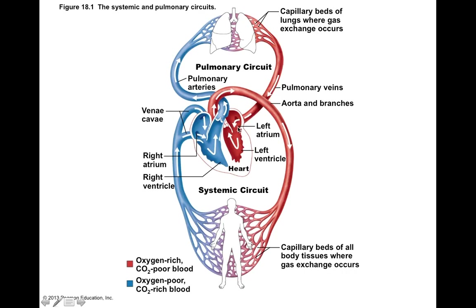The left side of the heart is part of the systemic circulation, and it pumps blood out to the rest of your body through systemic arteries, where your body's tissues can use that oxygen or nutrients. Those veins then converge back towards the heart and drain into the right side. So the right side receives blood from your body and pumps it to the lungs to get oxygenated, and the left side receives blood from the lungs and pumps it out to the rest of your body.